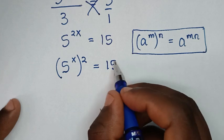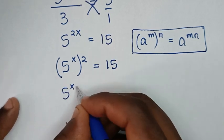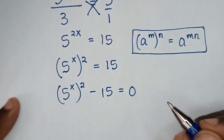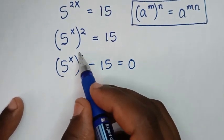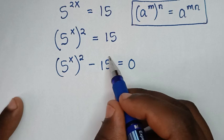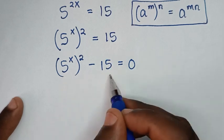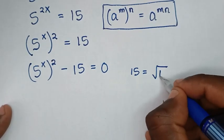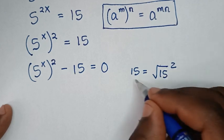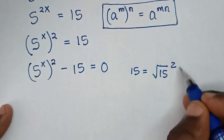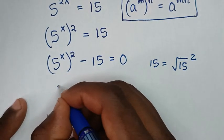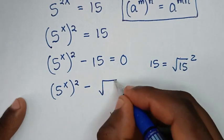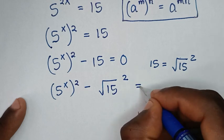In the next step, we take 15 to the left side, so it will be (5 power of x) squared minus 15 equals 0. Since we have a square, we also write 15 as a perfect square — 15 equals the square of square root of 15, because the square root and square cancel. So we substitute: (5 power of x) squared minus (square root of 15) squared equals 0.